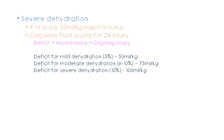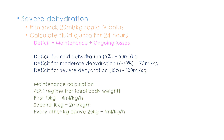Deficit is calculated by the weight loss. Remember we categorize dehydration into mild, moderate, and severe according to weight loss. For mild dehydration we give 50 ml per kg; for moderate, 75 ml per kg; and for severe, 100 ml per kg of normal saline.